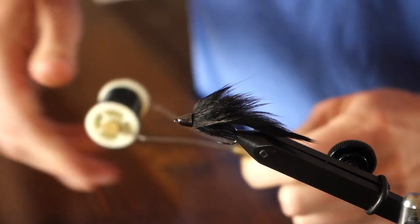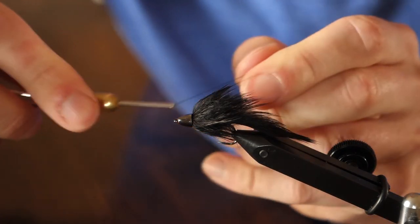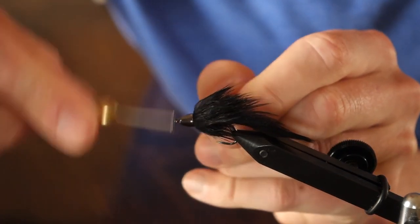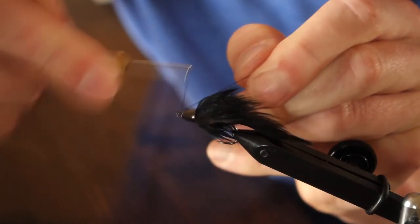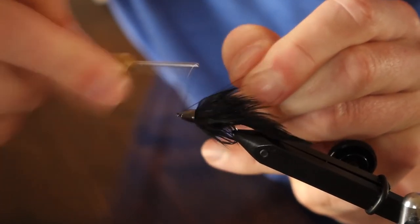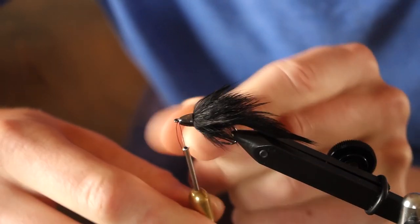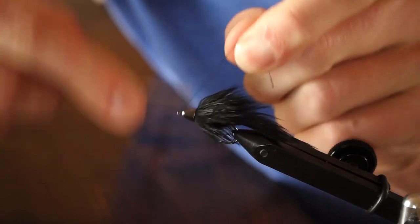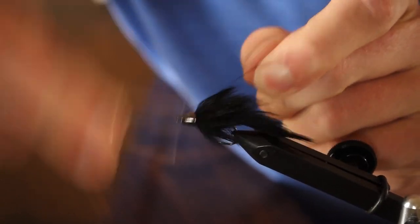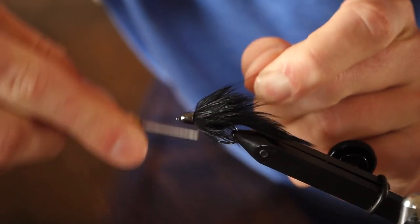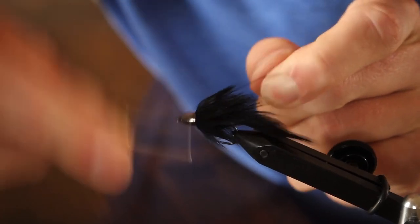The last thing I'm going to do, this isn't required, but I don't like the tungsten cone head to be all free and willy nilly. I'm going to tie just a little bit of a thread bump right in front of it between the cone head and the eye of the hook. What this does is help force that cone head back and push into the collar of the fly a little bit and keeps everything really tight and snug.